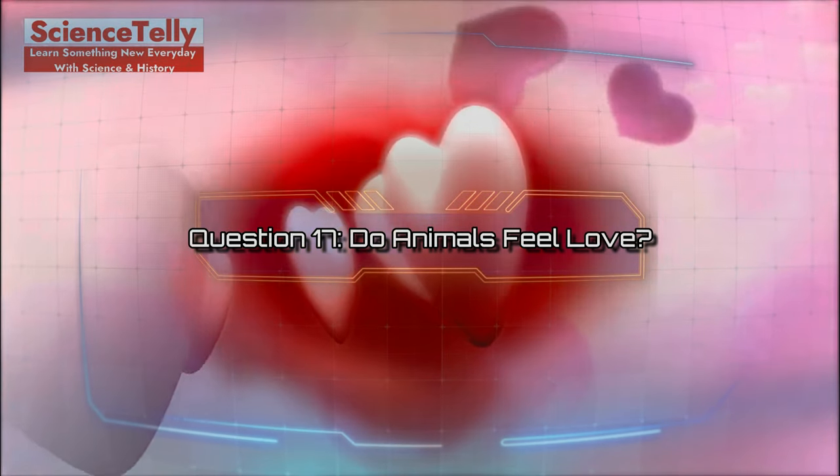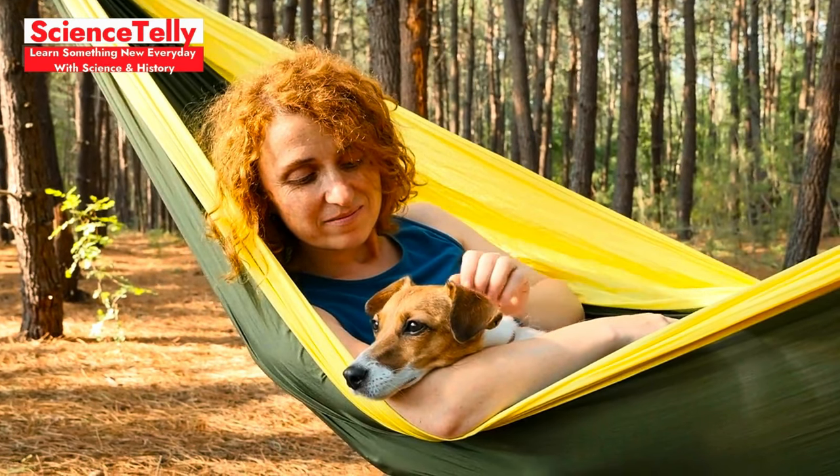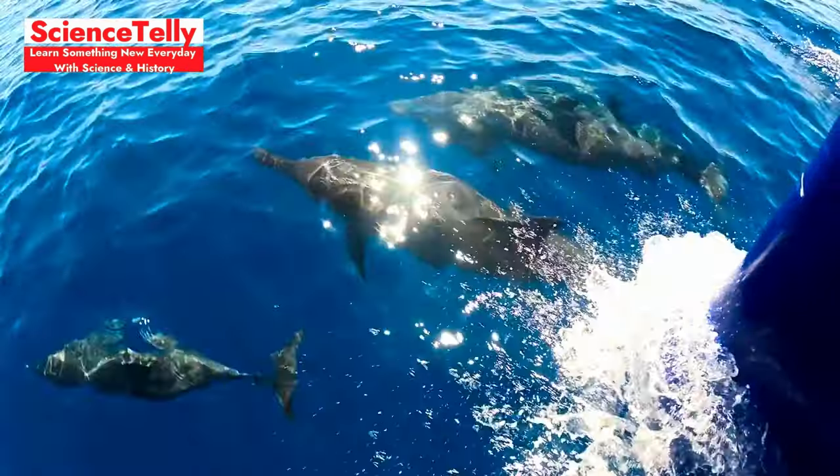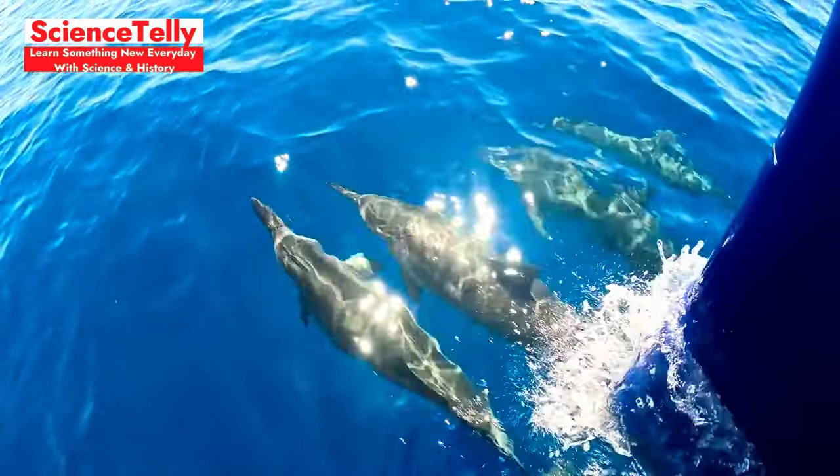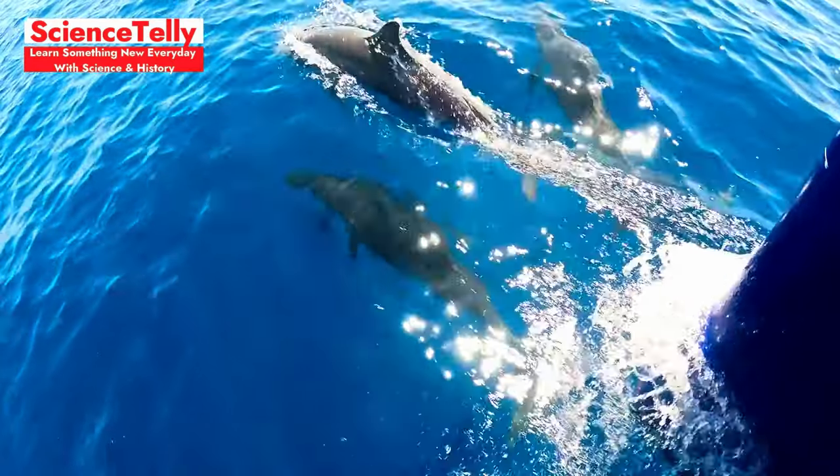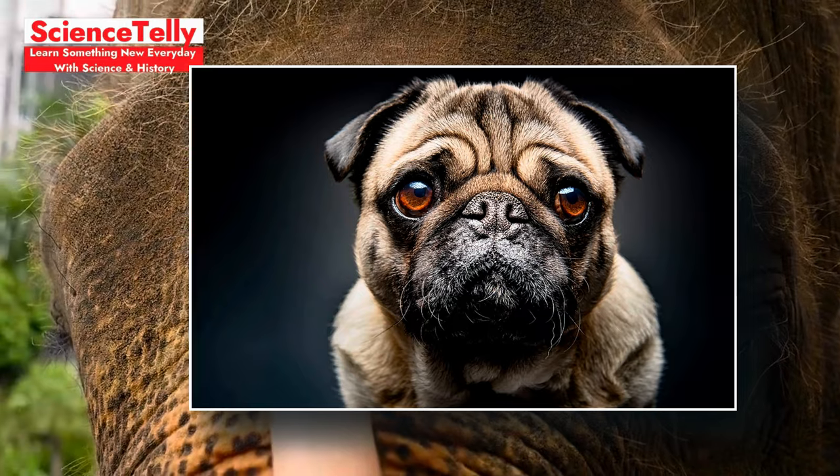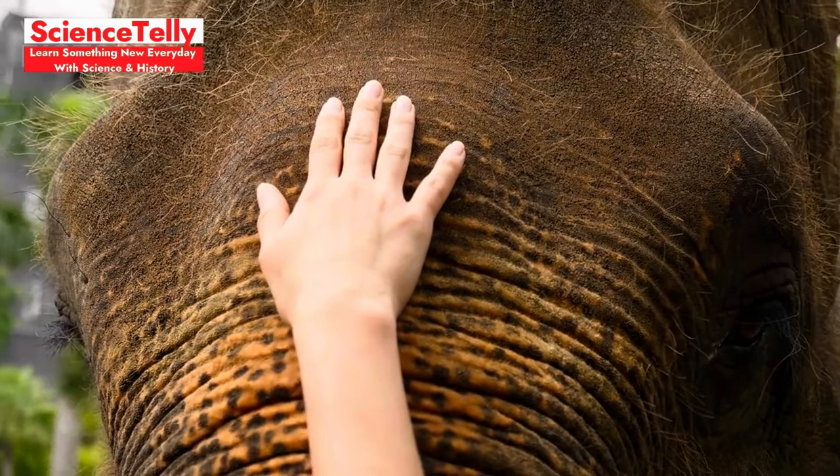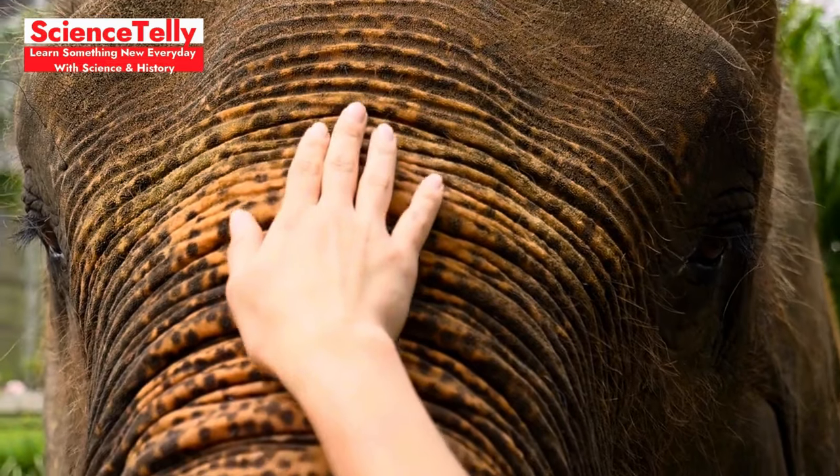Question 17. Do animals feel love? Let's explore a heartfelt question. Research suggests that many animals, including dogs, elephants, and dolphins, exhibit behaviors indicating they can form strong social bonds with others. For instance, dogs are known for their loyalty and attachment to their owners, while elephants display deep emotional connections with their family members, often mourning their losses.